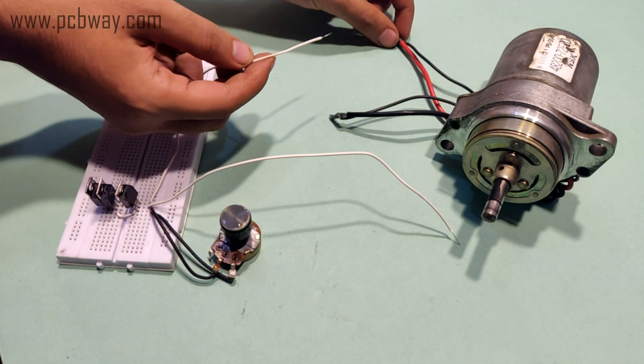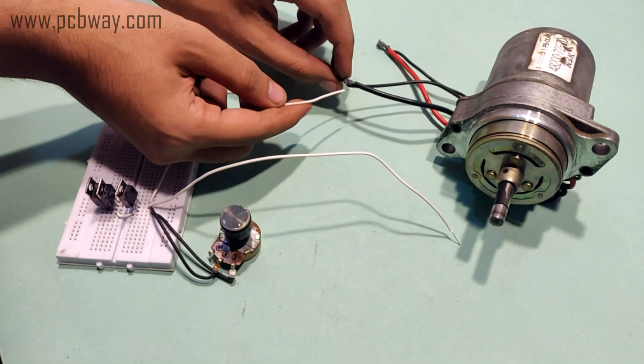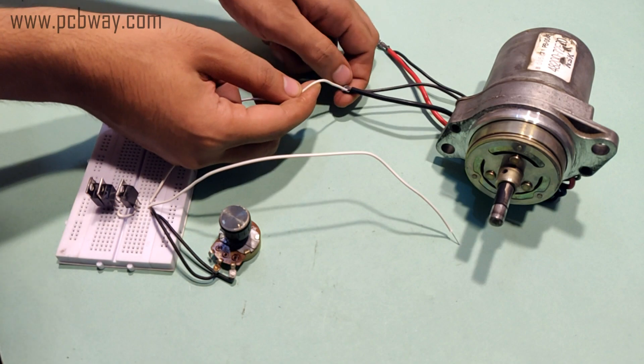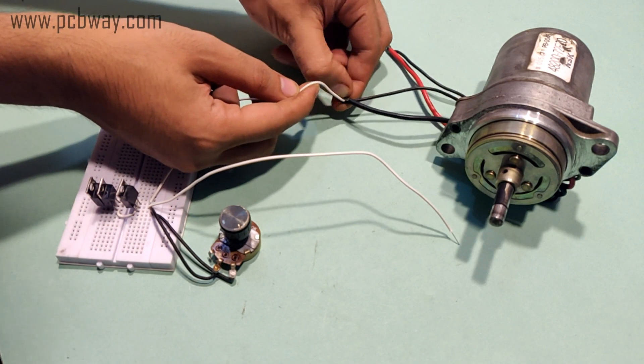The wire from the common emitter will be connected to the DC motor rated at 12V DC, while the wire from the common collector will be connected to the positive DC supply.